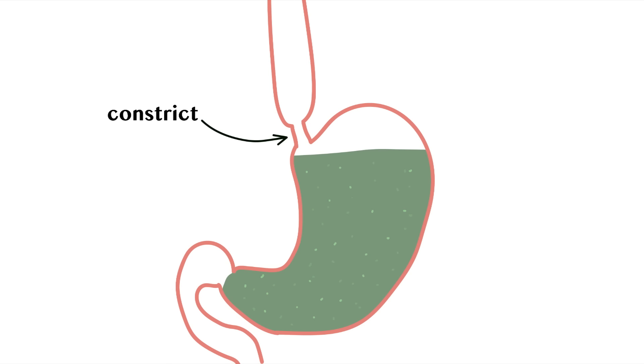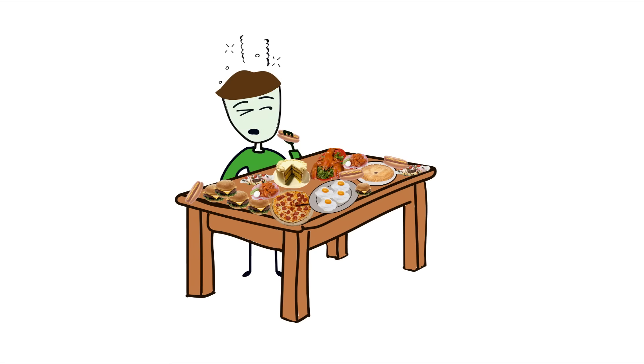It also constricts the opening of the stomach to prevent backflow of food into the esophagus. The expanded stomach stretches the sphincter, making it open, which is why you feel nauseous when you overeat.